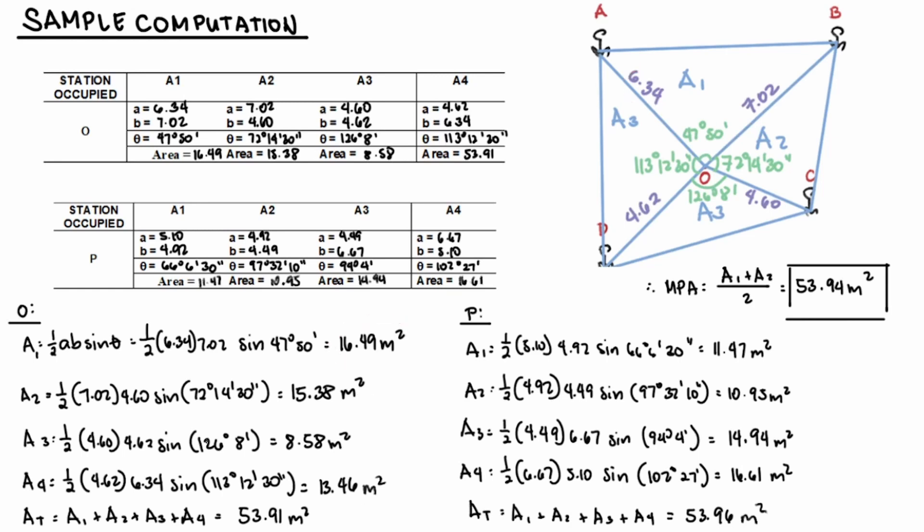Then do the same computation for A2, A3, and A4. We'll get the values 15.38, 8.58, and 13.46 meters squared respectively.